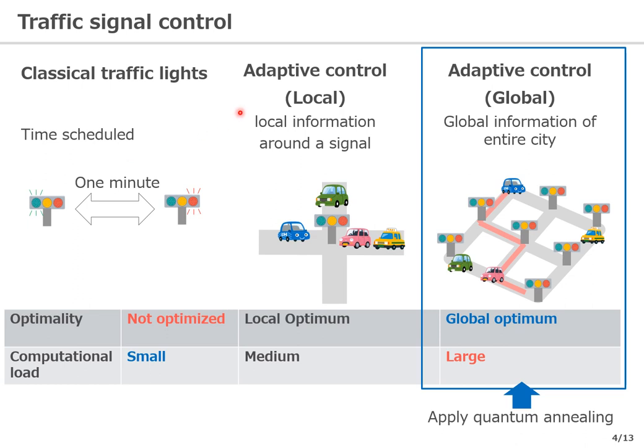What has begun to be used recently is called adaptive control. This is a method in which each traffic light observes the surrounding traffic conditions and decides its own display according to those conditions. For example, when the number of cars waiting on one road exceeds a certain number, the display is switched in the opposite direction. This technique could be more efficient than the classical one, but global optimization of the entire city has not been achieved because it only relies on local information.